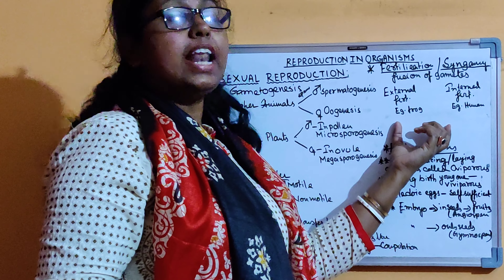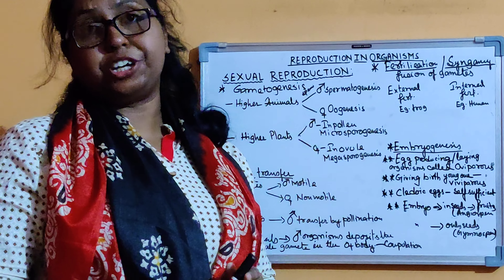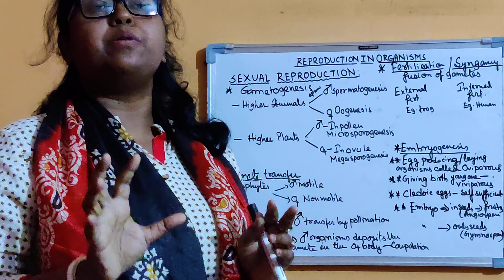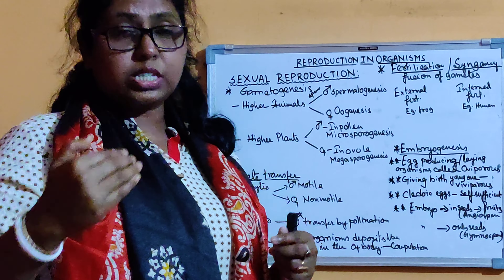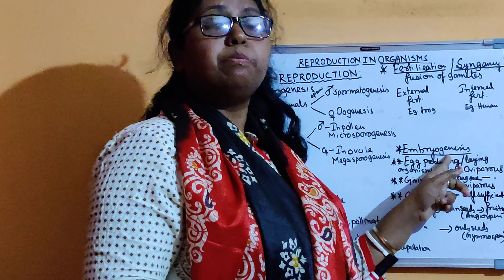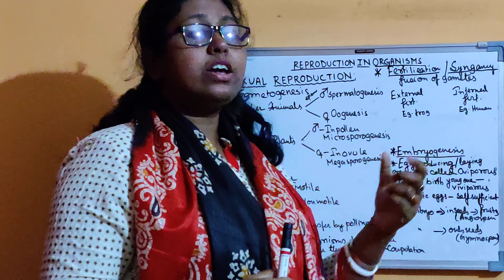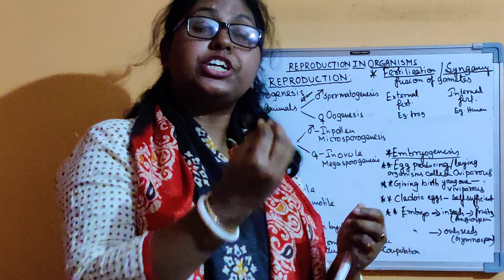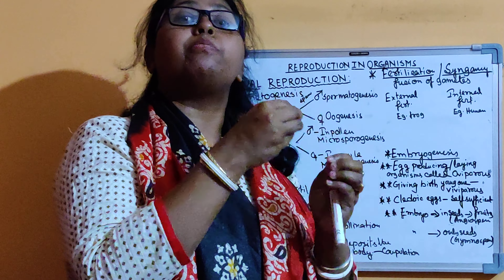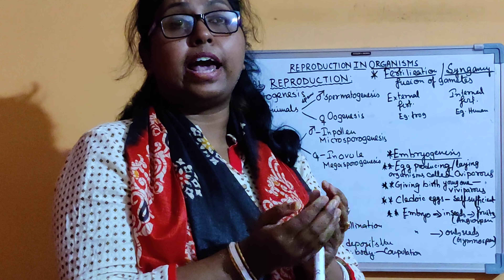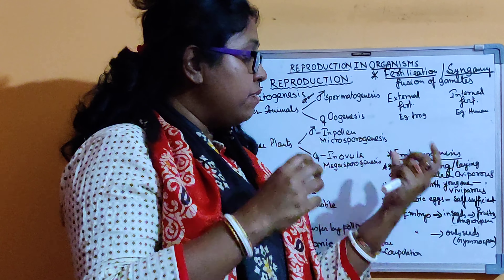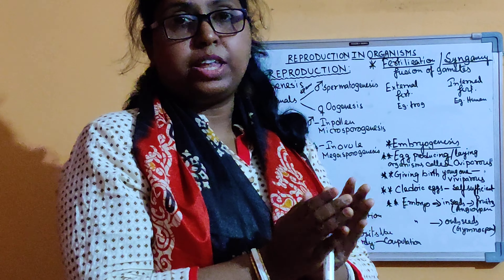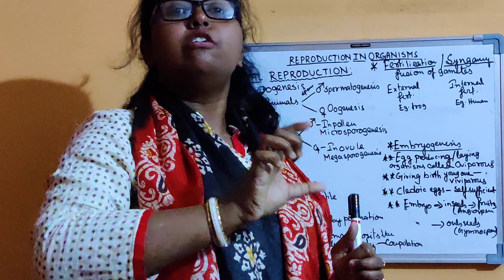After fertilization, that means after the formation of the zygote, different changes occur in the zygote and produce the embryo. The process of embryo formation is called embryogenesis. Some living organisms like reptiles and birds produce eggs — the fertilization takes place in the female body, and after the formation of the zygote, the zygote is covered by a shell. The living organism lays this zygote as an egg. This process is called oviparous.